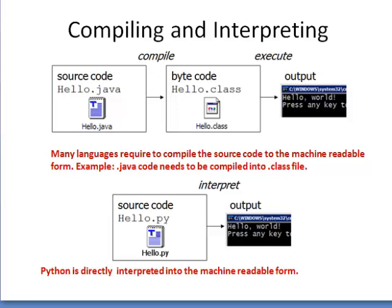Now let's look at the basic difference between compiling and interpreting, comparing Java and Python. In Java, the source code in a .java file is first compiled, generating bytecode in a .class file. That .class file can then be executed on any platform through interpretation to give output. In contrast, with Python, the source code in a .py file is directly interpreted into machine-readable form and gives output — no separate compilation step is needed.